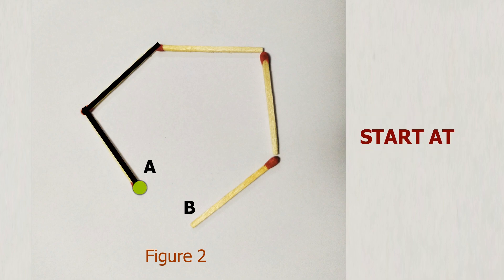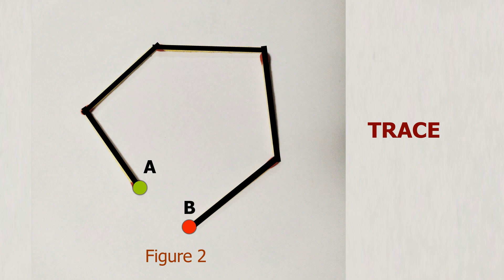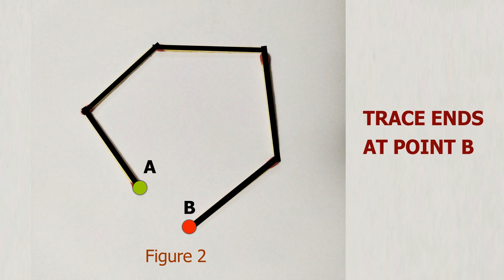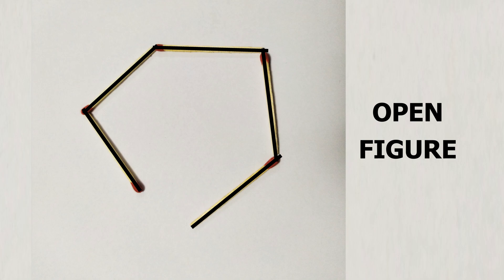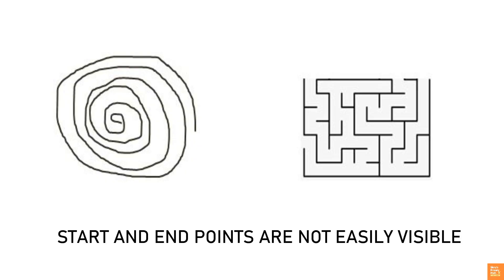Start at point A and trace the figure with your finger. The figure ends at point B, a different point altogether. Figures that start and end at different points are called open figures. Certain figures can be visually seen as open where both the start and end points are visible. When the start and end points are not easily visible, we need to trace the figure to determine whether it is open or closed. Through repeat practice, children familiarize themselves with open and closed figures and their basic properties.